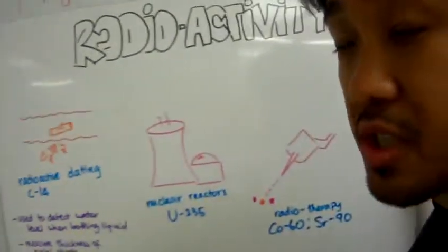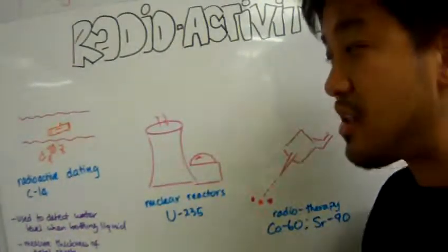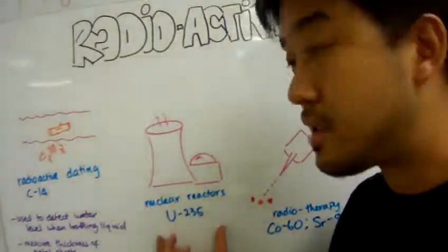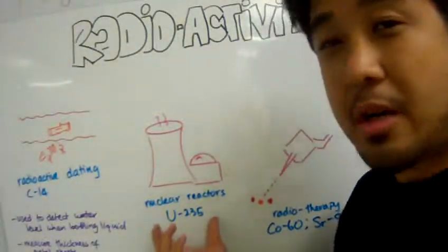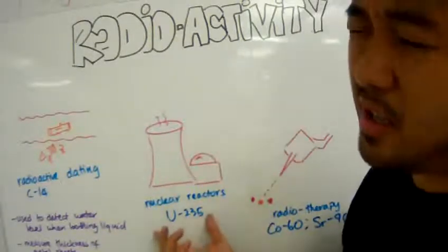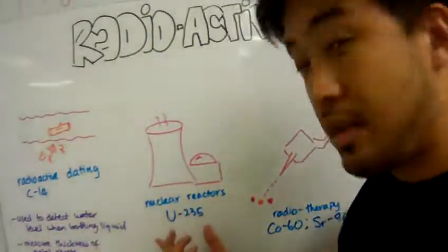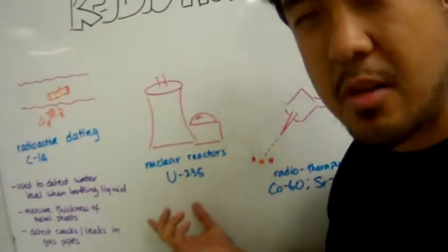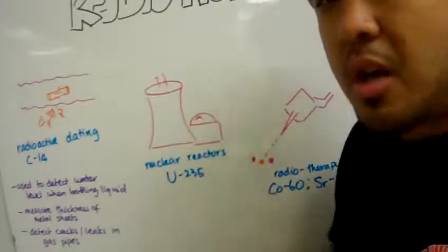Other uses of radioactive isotopes in the real world is nuclear reactors, where nuclear power plants such as the ones in Russia, France, and the United States use this unstable isotope called uranium-235.